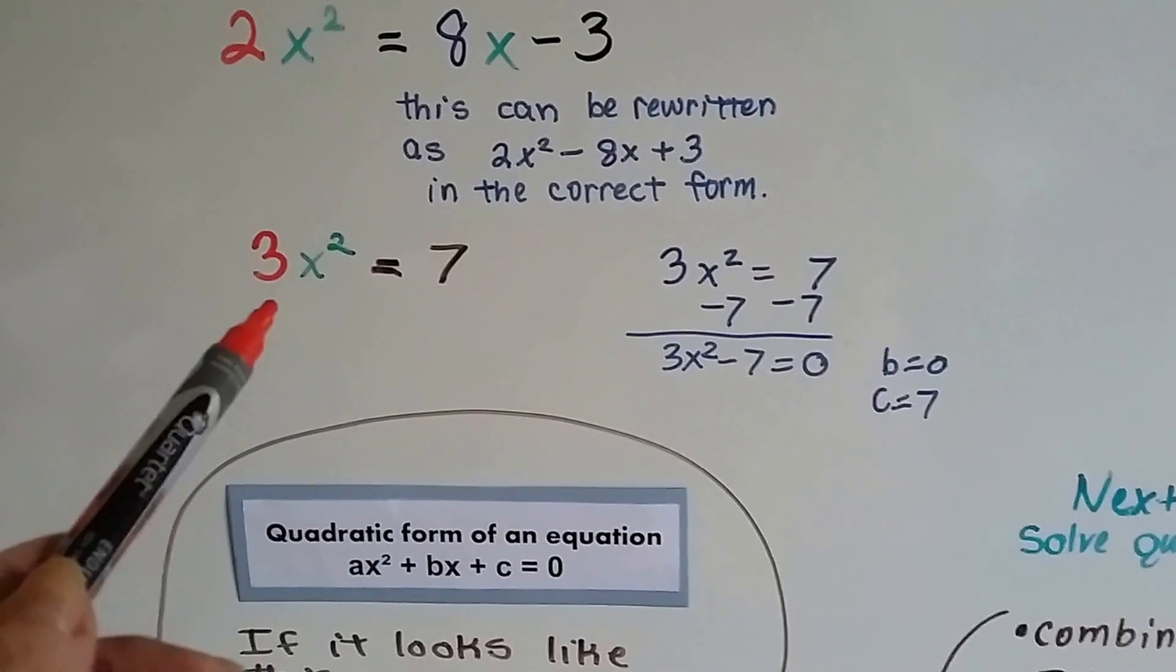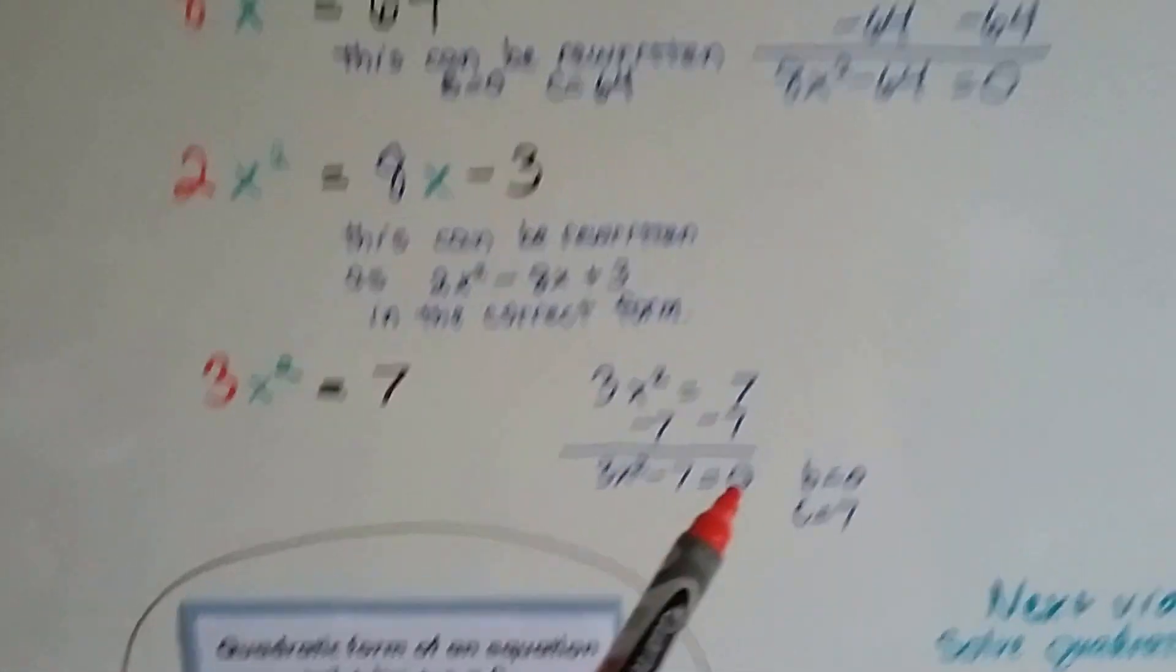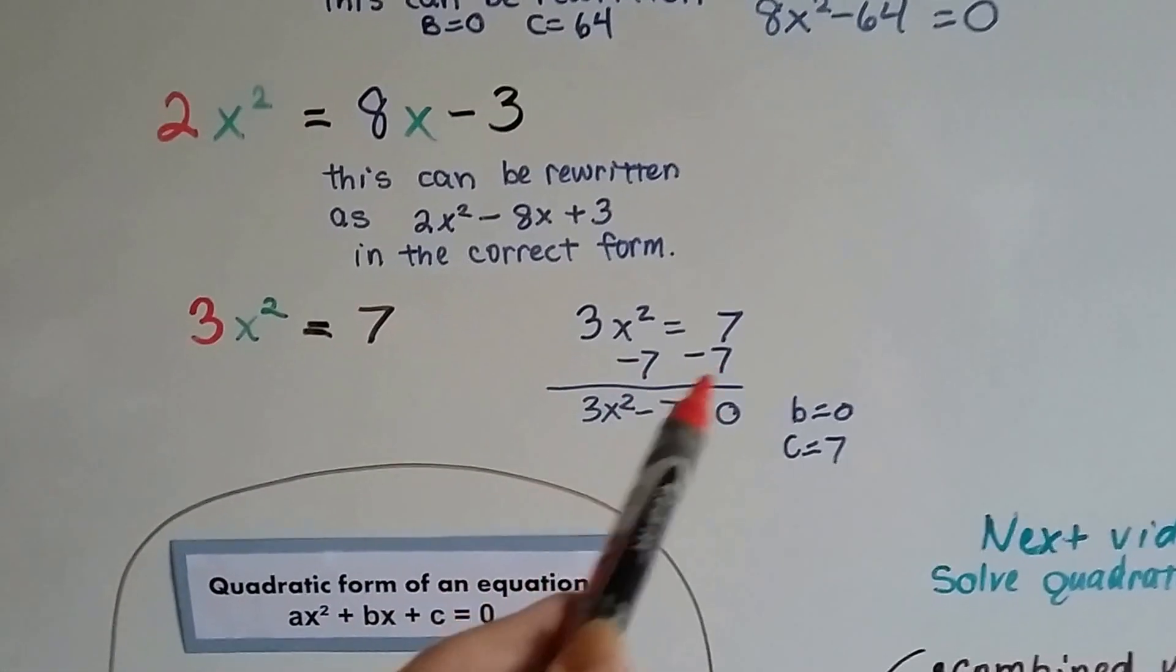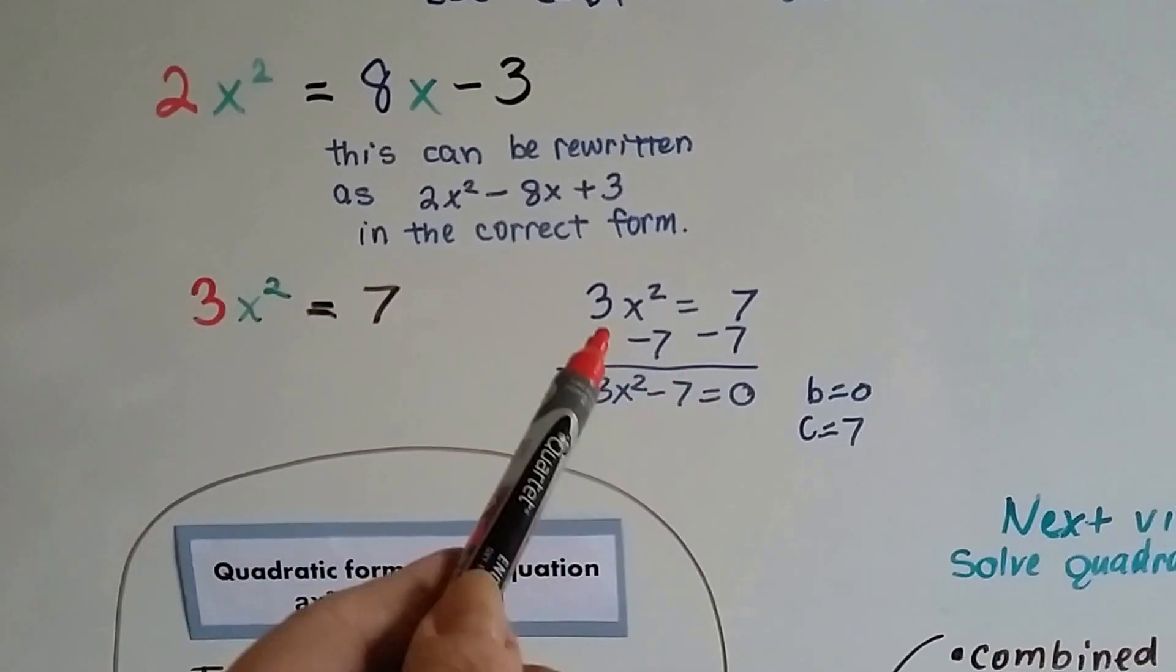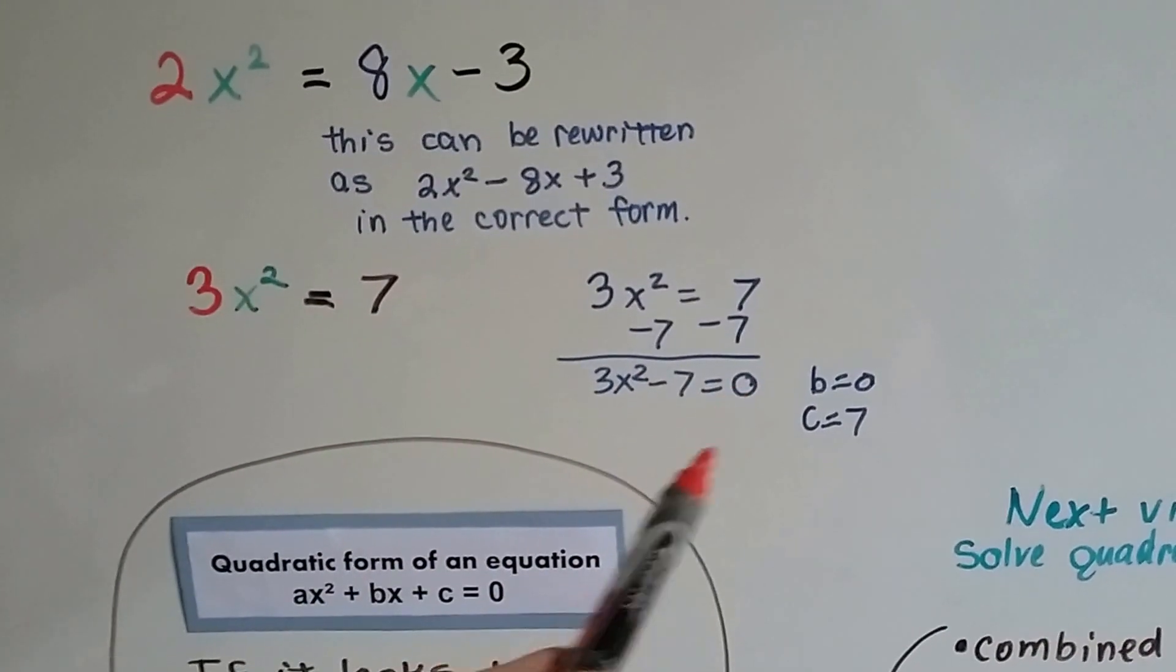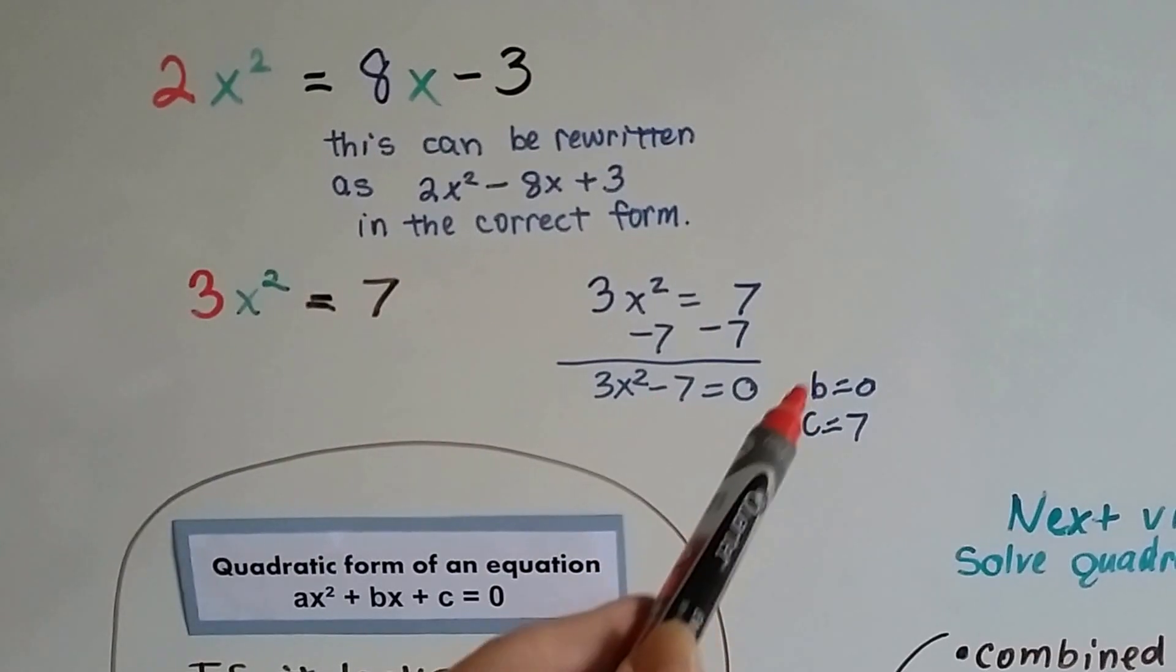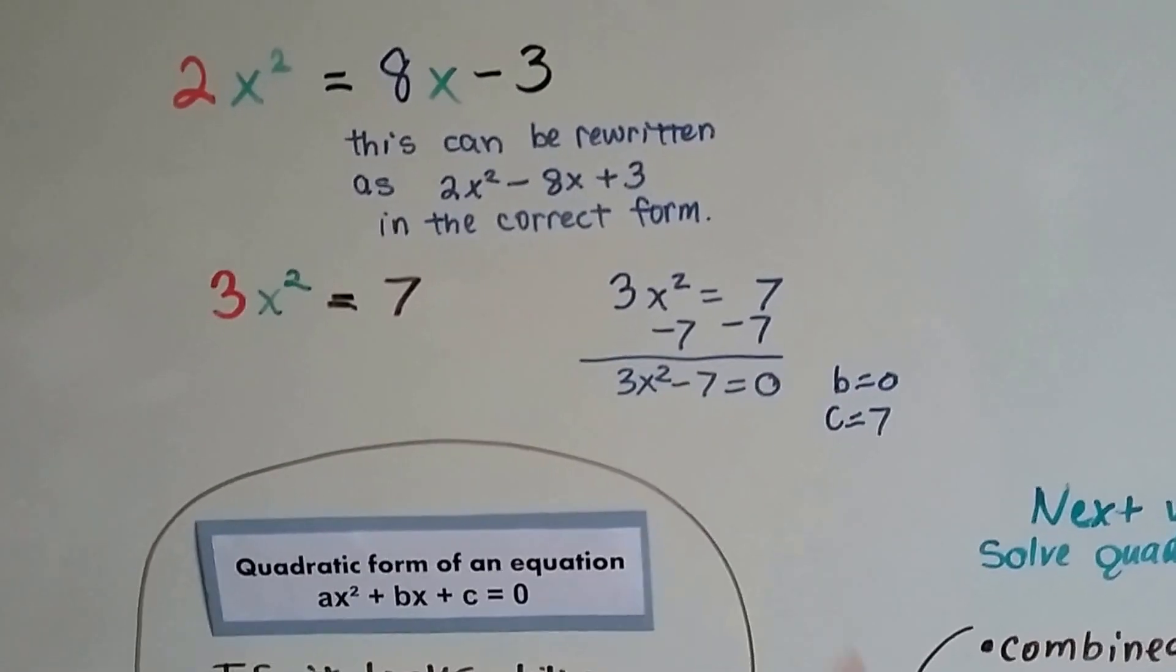For this one, 3x squared equals 7. We could do the same thing we did with this one. We can just subtract 7 from each side of the equation, set this side to equal zero, and now we've got 3x squared minus 7. The b is set to zero and the c is 7. See?